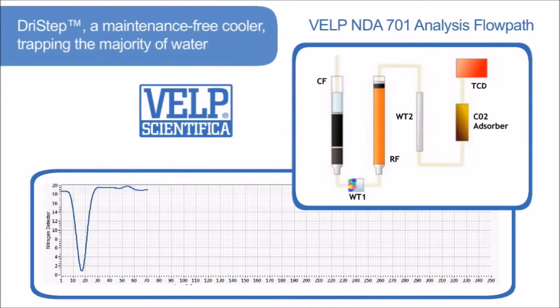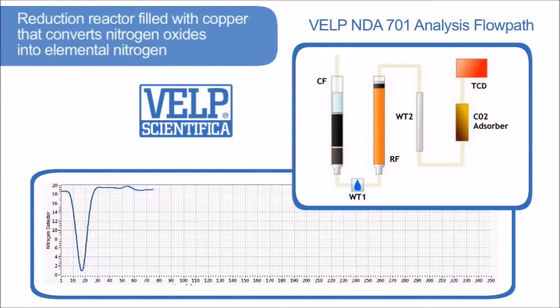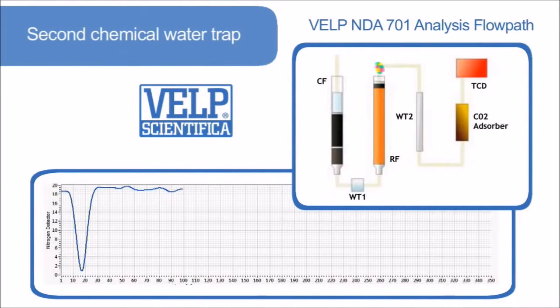The gases pass through the reduction reactor, filled with copper, that converts nitrogen oxides into elemental nitrogen at 650 degrees centigrade. Any remaining water is completely absorbed by the second chemical water trap.